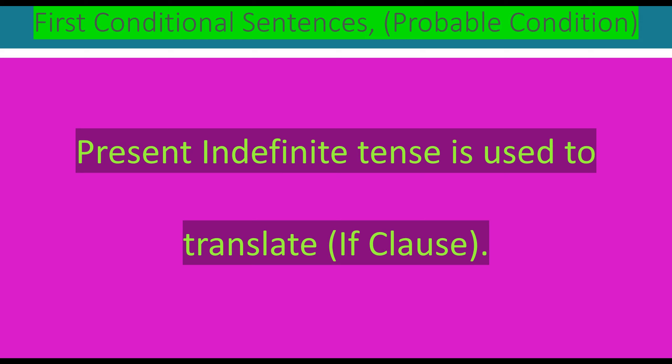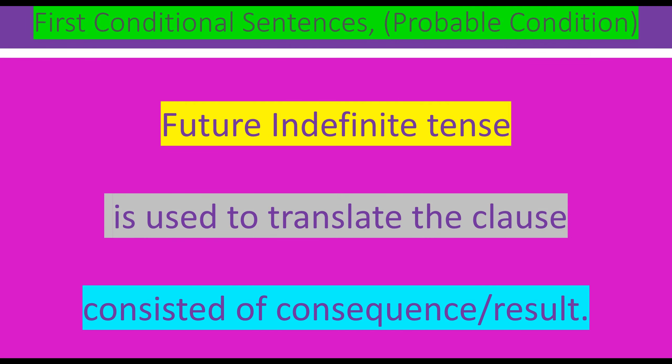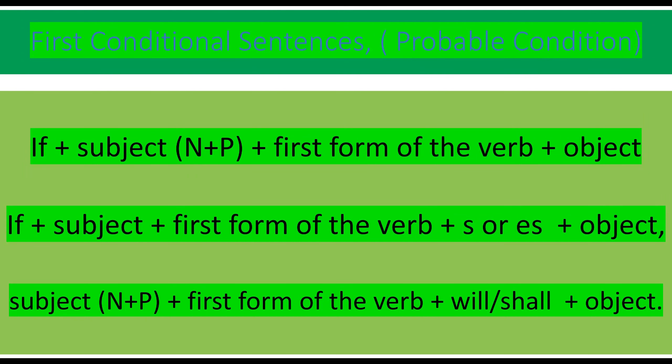Present indefinite tense is used to translate the if-clause. The if-part is translated into present indefinite tense. The second part, which is the result or outcome or consequence part, is also translated into present indefinite tense. We use present indefinite tense to translate the clause consisting of consequence, result, or outcome. If first, then subject — noun or pronoun — any noun or pronoun will be written.